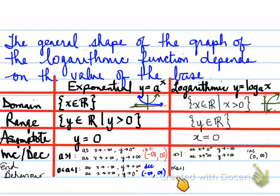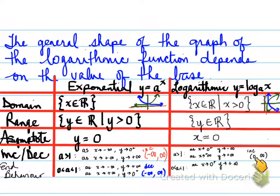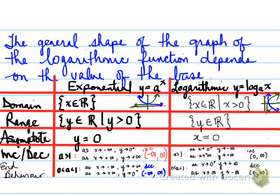If the base is between 0 and 1, looking at the blue graph, we write the end behavior, and it is a decreasing function on that interval. This is the explanation of domain, range, asymptote, increasing/decreasing, and end behaviors of the general logarithmic and exponential functions.